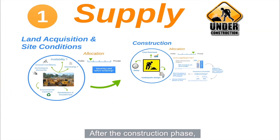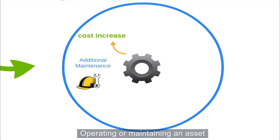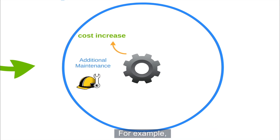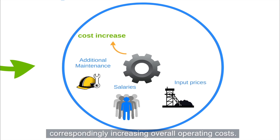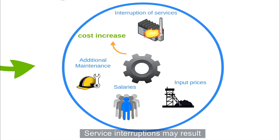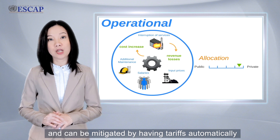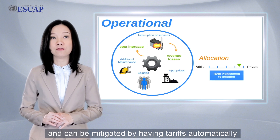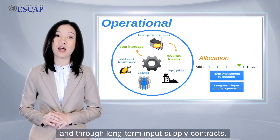After the construction phase, operational risks may need to be considered. Operating or maintaining an asset might be more expensive than planned. For example, salaries or input prices might be higher than anticipated, correspondingly increasing overall operating costs. Service interruptions may result in considerable revenue losses. These risks are also allocated to private partners in a PPP project, and can be mitigated by having charges automatically adjusted to inflation and through long-term input supply contracts.